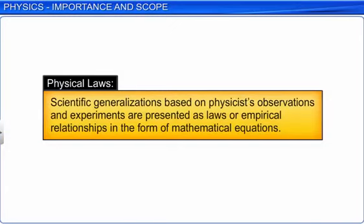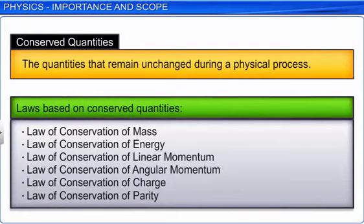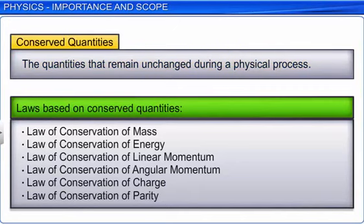Apart from finding the facts through observation and experiments, physicists always try to summarize these facts as laws or empirical relations in form of mathematical equations. These are known as physical laws. Most of these laws are based on some special quantities that remain unchanged in a process, which are known as conserved quantities.